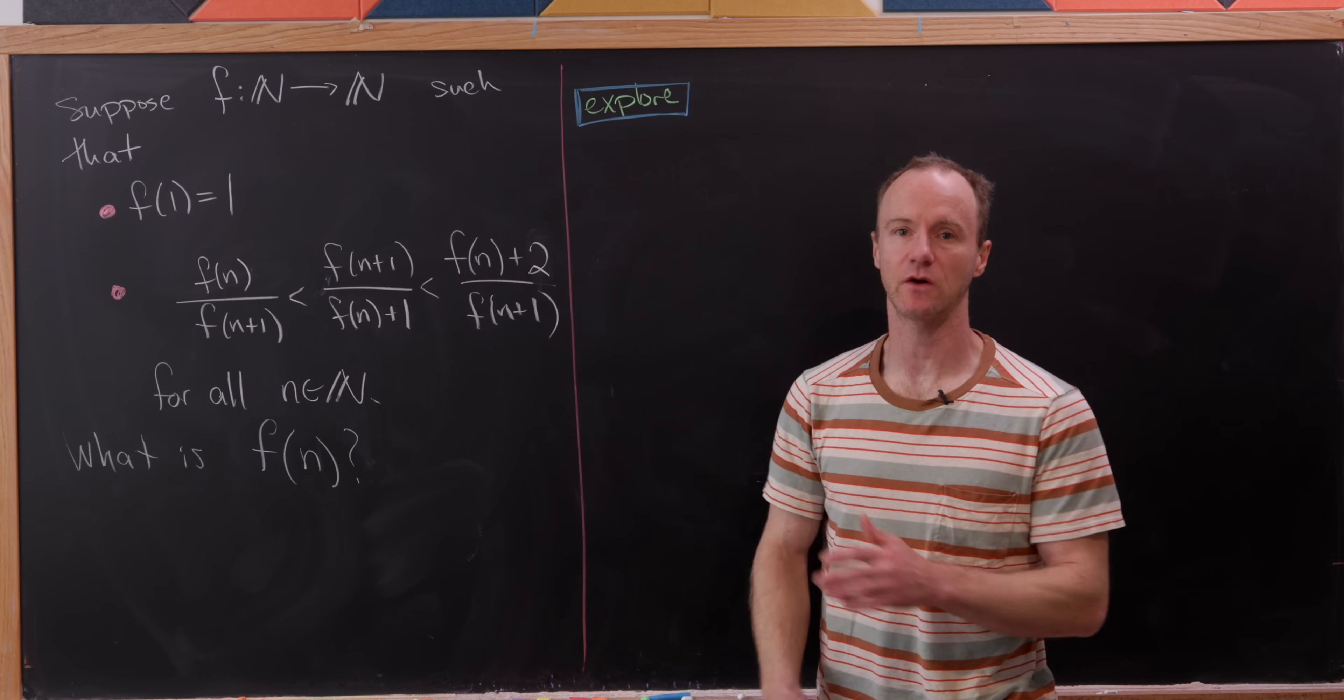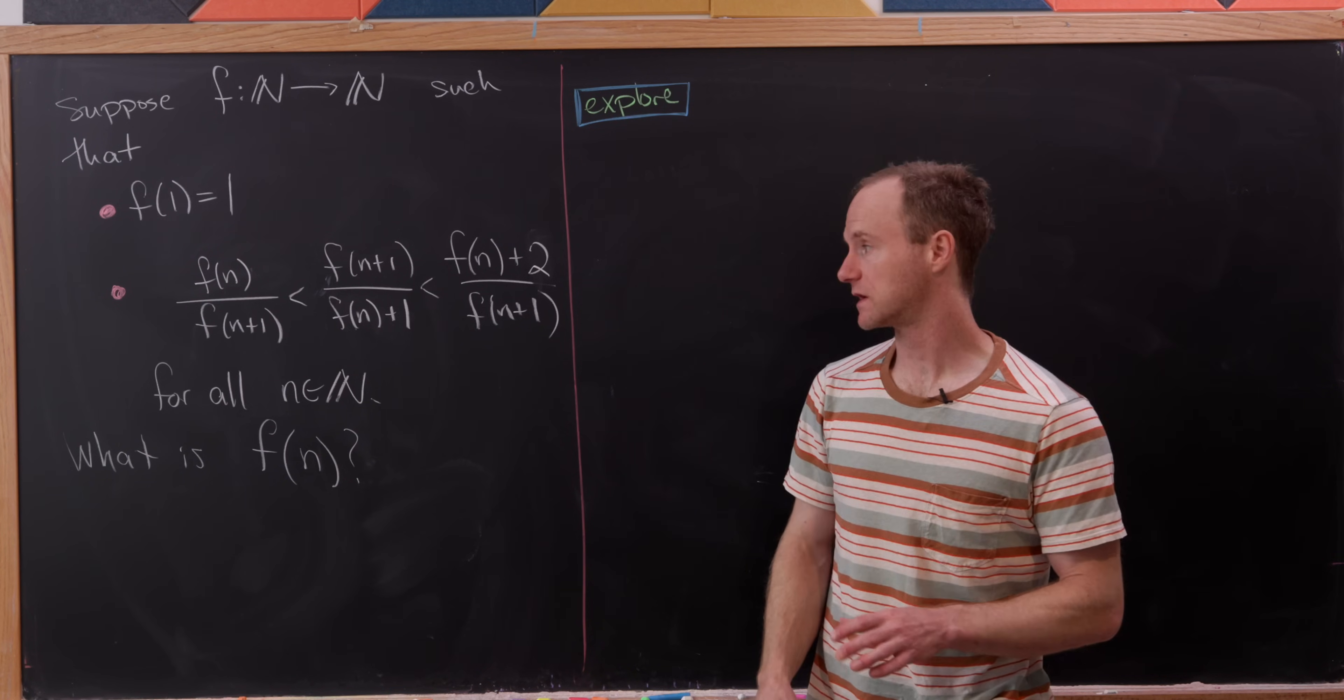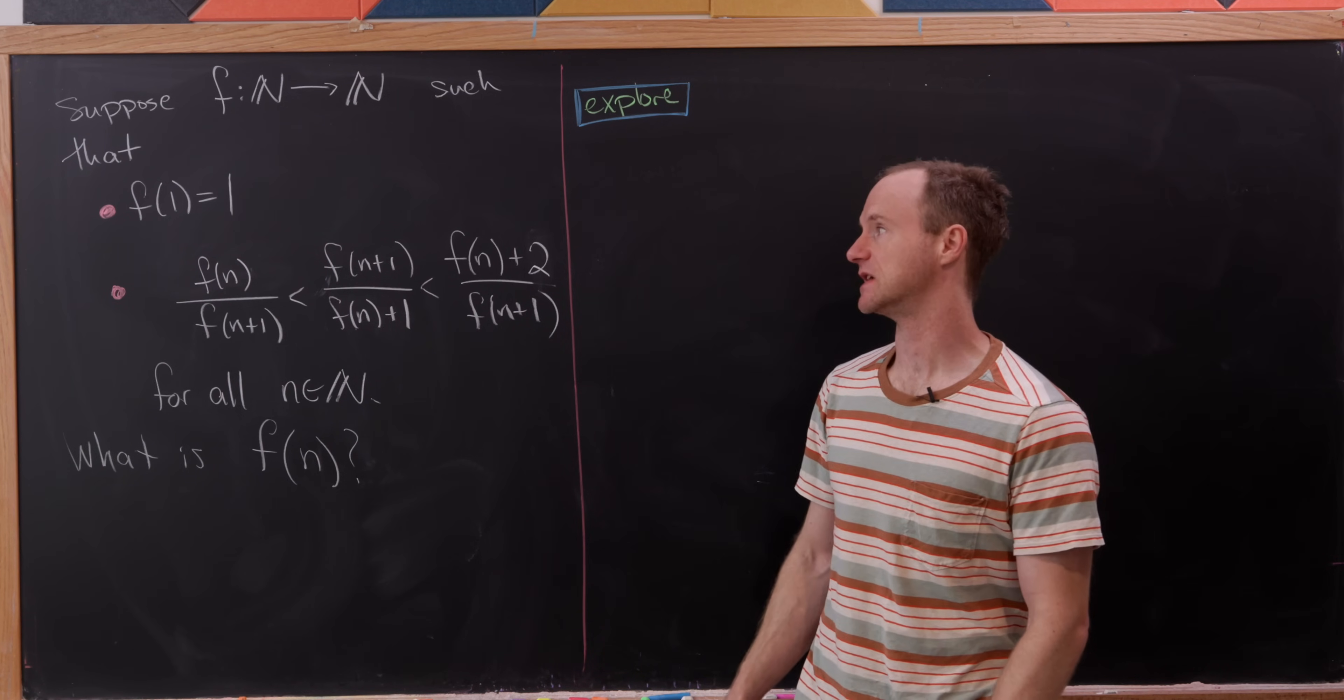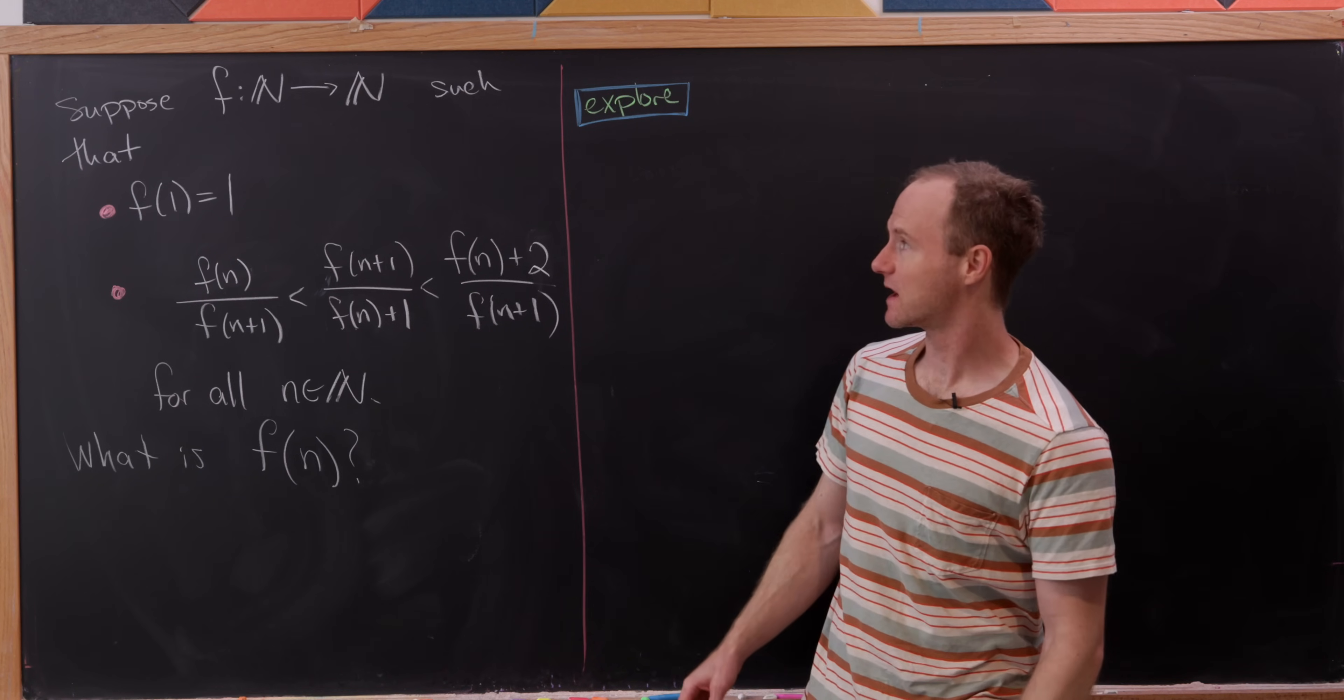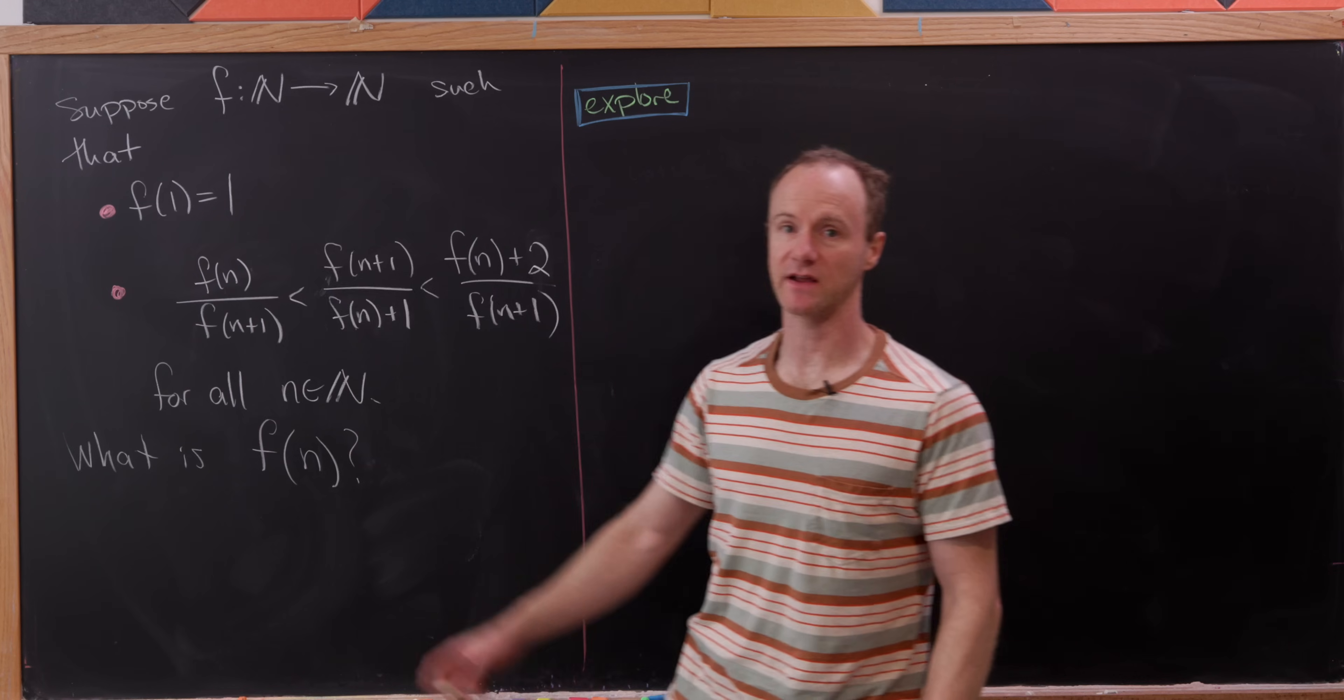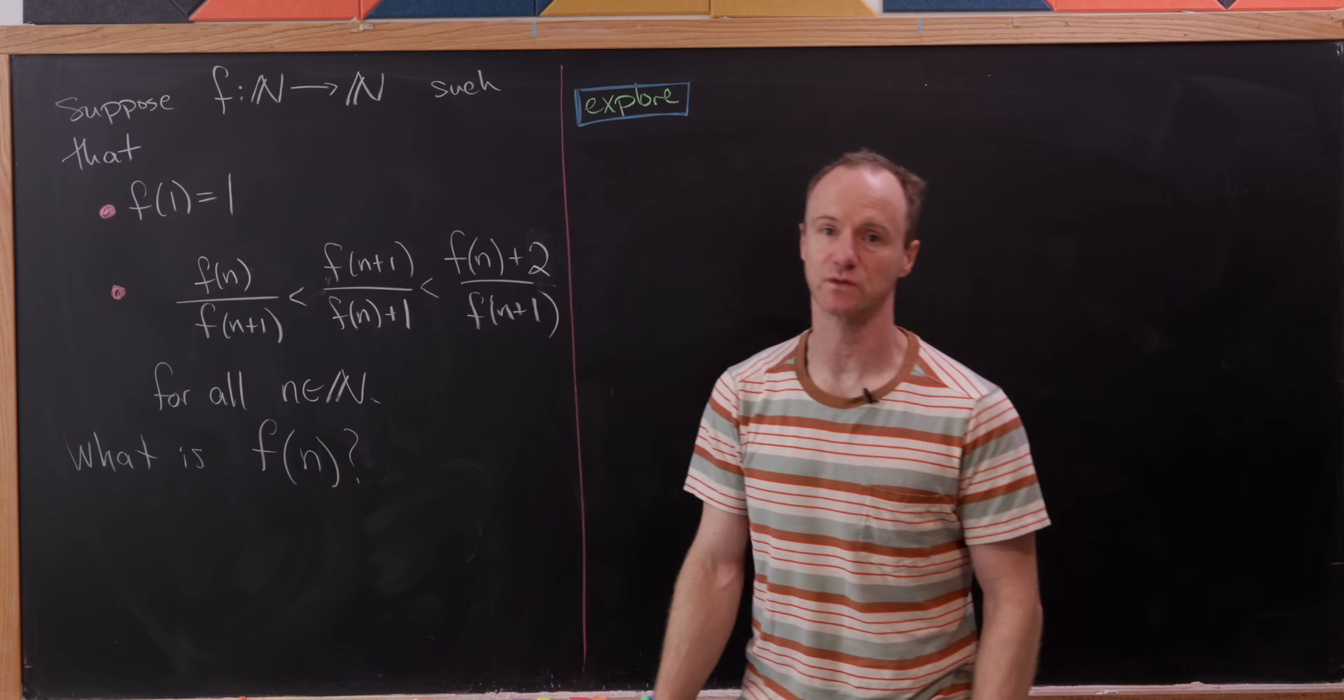Today we're going to look at a nice functional inequality, and this inequality is strong enough that we'll be able to determine exactly what the function is. The setup is that we have a function from natural numbers to natural numbers satisfying the condition that f of one is one.